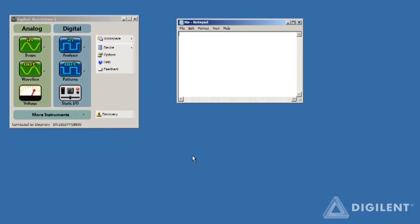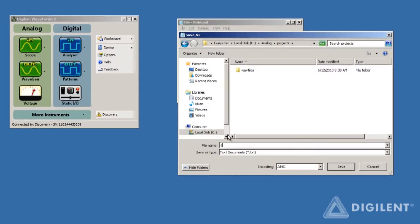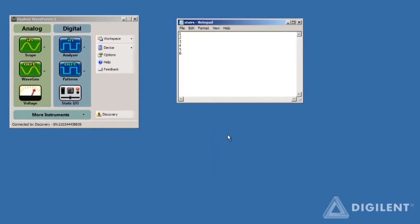The first thing we need to do, of course, is create our text file. I've opened Notepad, and I'll type the numbers 1, 2, 3, 4, 5, and 6 on successive lines in the file. Now I'll save the file somewhere where I can find it later. I'll name the file 'stairs,' and now it's saved.